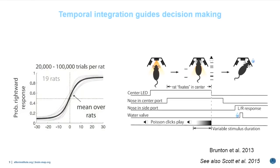Rats can do this quite well. Here I'm showing the psychometric performance of 19 rats trained on this task. On the y-axis is the probability that the animal went to the right side, and on the x-axis is the difference between the right and left clicks. On trials with more clicks on the right the animal orients right; on trials with more on the left the animal orients left.